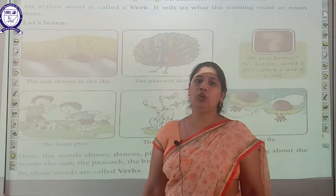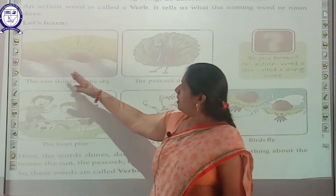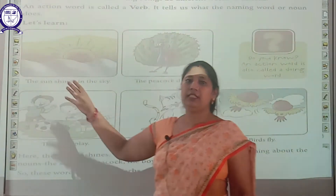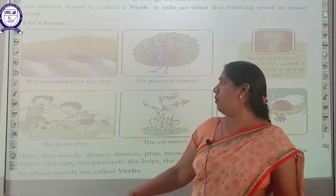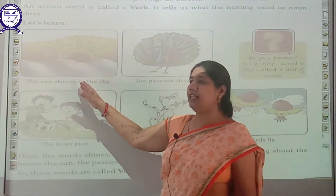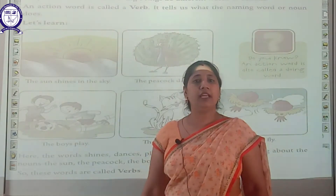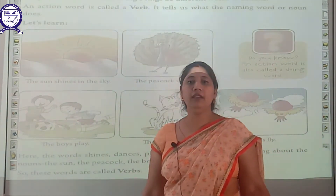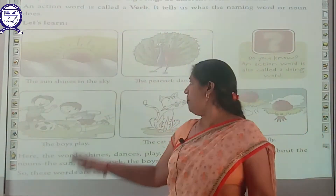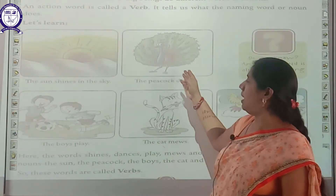An action word or doing word is called a verb. For example: the sun shines in the sky — sun is a noun, and shines is a verb. The peacock dances — peacock is a living being, and dances is the verb, telling us what the peacock does.